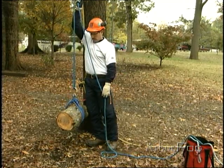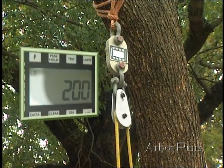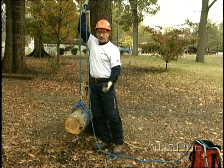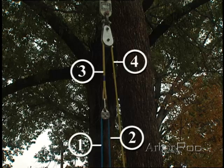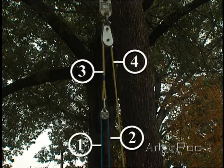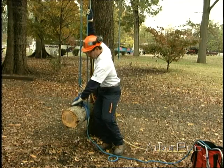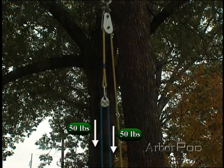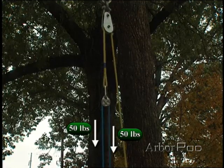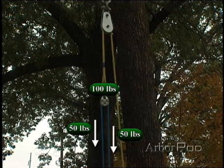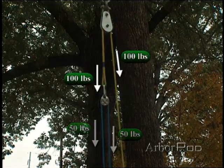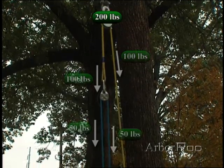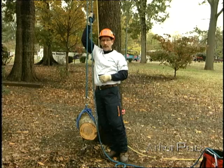Our load is 50 pounds. As I raise the 50-pound load with the rigging line, you see that our force is actually 200 pounds. This reaction force is something we must be aware of. We have four parts of the rope acting on the block and dynamometer. With 50 pounds of wood, there is 50 pounds of force in both parts of the blue rope. Where the pulley is attached to the yellow double braid with the carabiner, we have 100 pounds of force, and then to hold that we have 100 pounds in the other side of the rope — giving us 200 pounds, or a four to one ratio at the block.